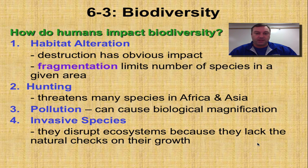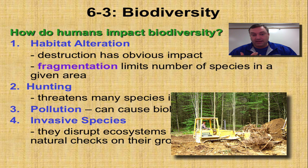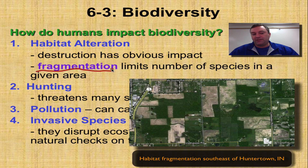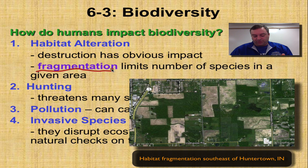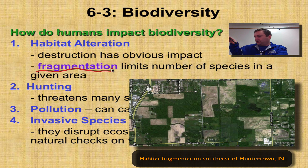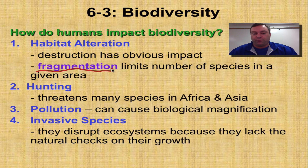Habitat alteration: humans may come along and bulldoze a habitat and put up a shopping mall, and obviously that's going to have a great impact. We see this a lot in our school district, and it's called habitat fragmentation. Fragmentation limits the number of species because you have individual different pockets of ecosystems. Think about the neighborhood you live in — you've got a housing addition, woods, then farmland, and a couple more miles away the same thing: farmland, housing addition, woods. That's all fragmented. It's not one continuous forest like it would have been 300 to 400 years ago in this area.